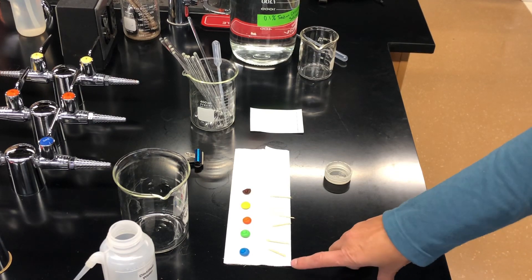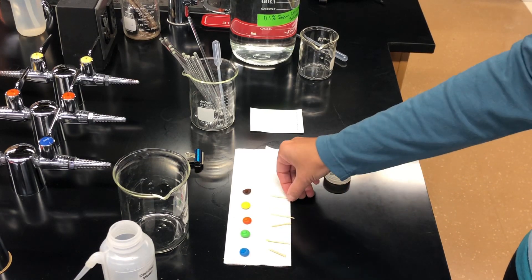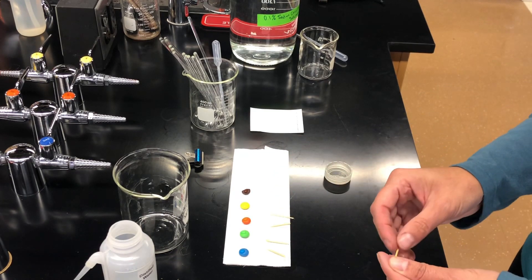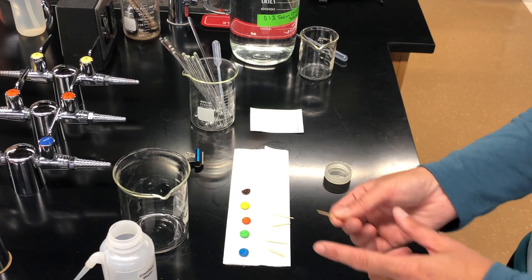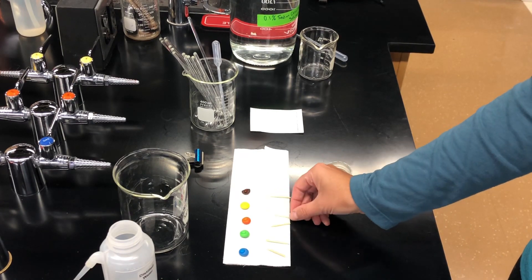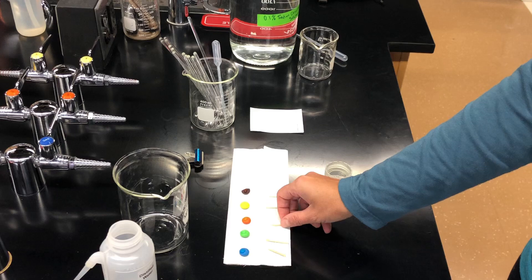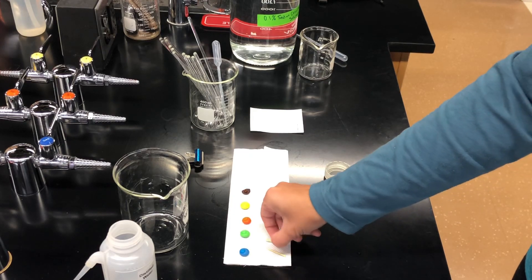And while that's sitting, I'll show you I have a toothpick for each color. So all I did was I broke a long toothpick in half. And we have the pointy side ready to roll. So each color should have their own so everybody has a clean one for each color.